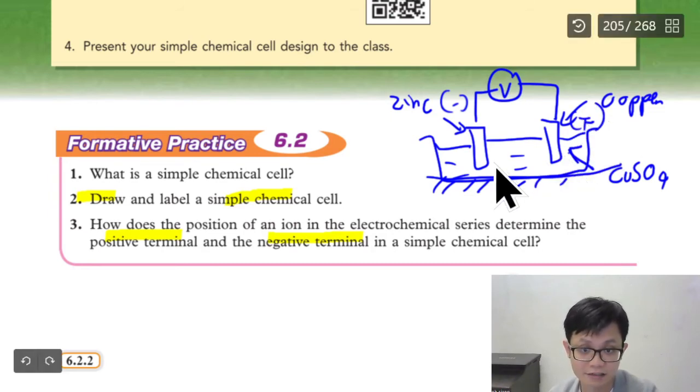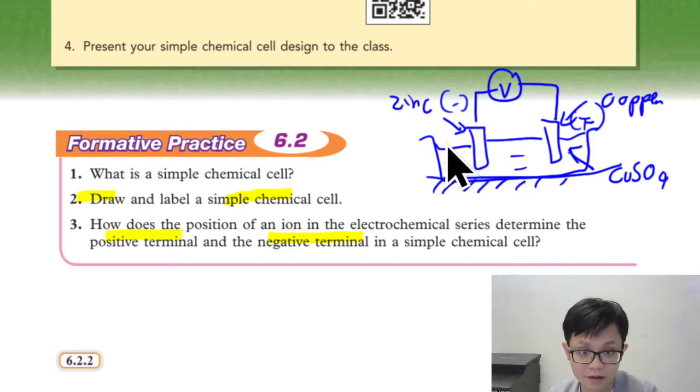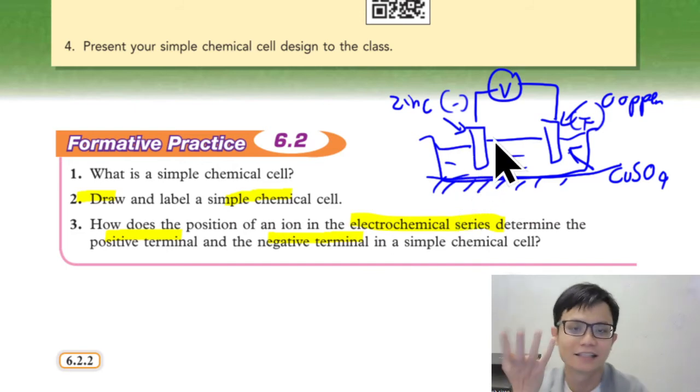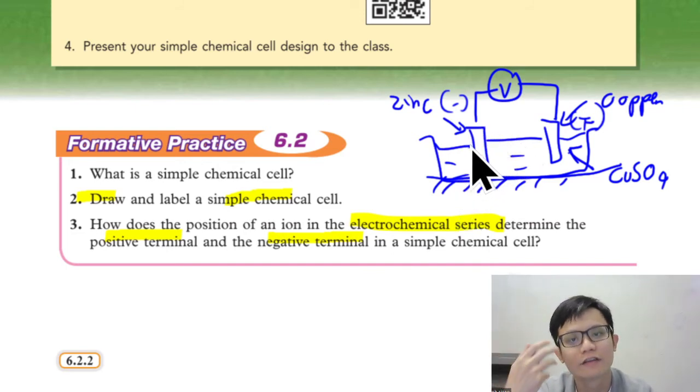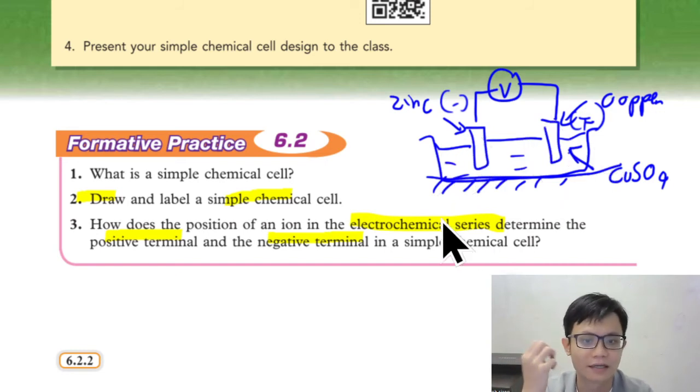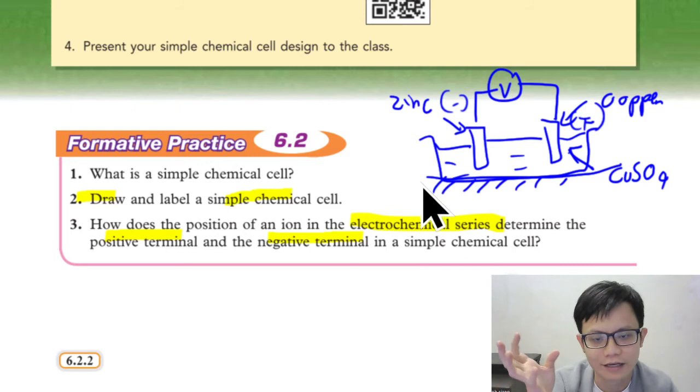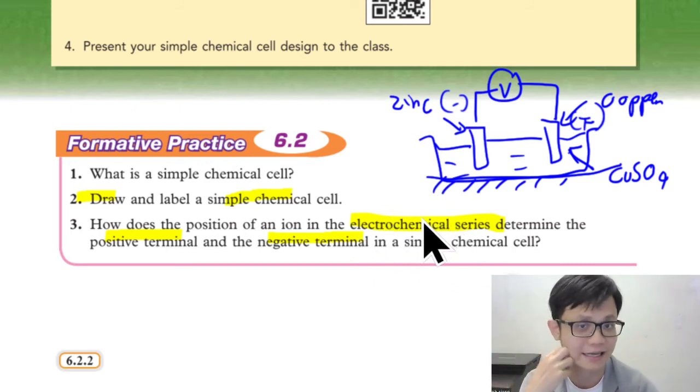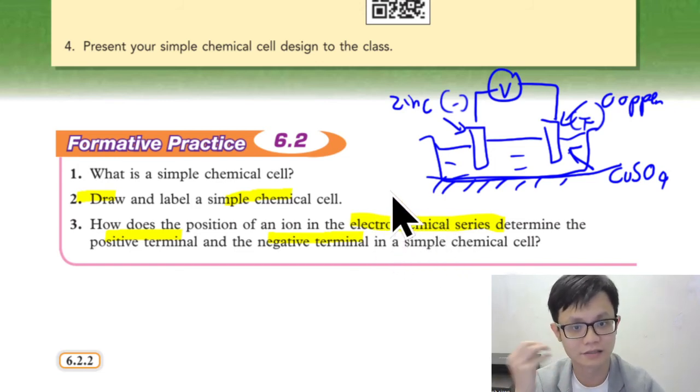Why? Let's say the question asks why. Because zinc is above copper in electrochemical series. Easy to say it's up. But you don't get marks because you just say up. Yes, you need to say zinc is above copper in electrochemical series.